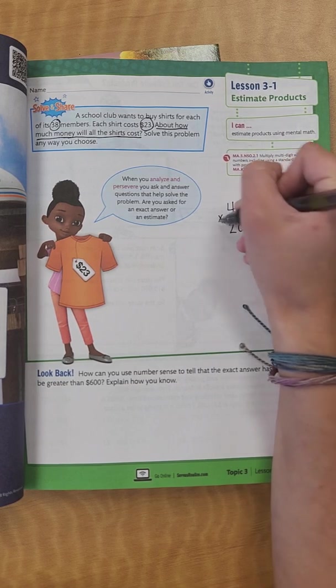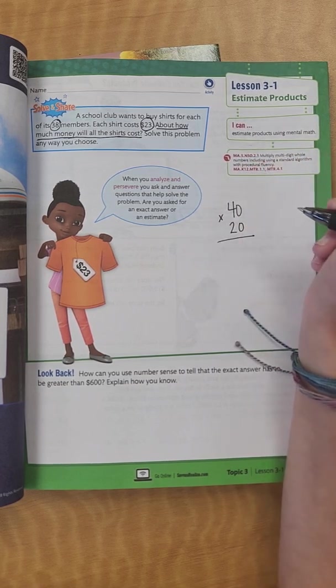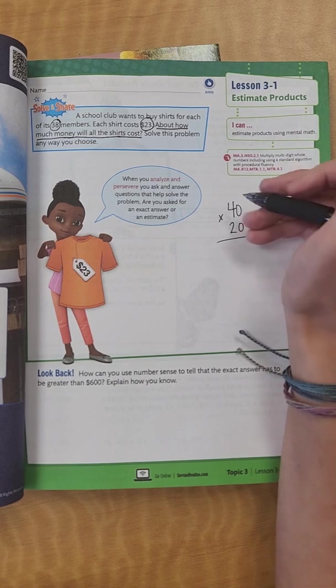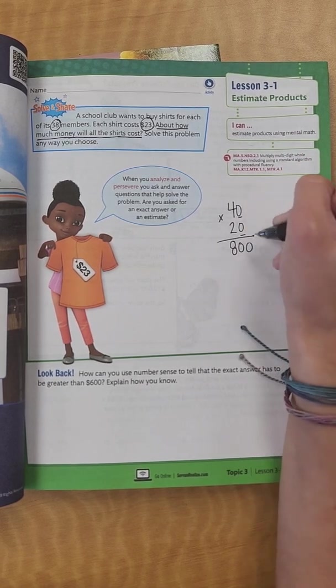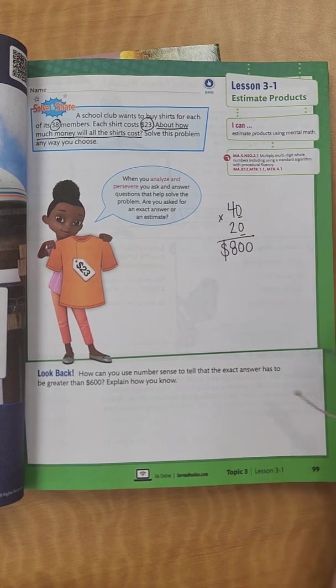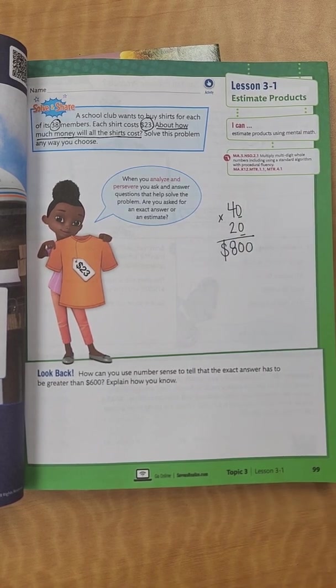So I'm going to say 40 times 20. Now, that's mental math. I can do that real quick. I know that 4 times 2 is 8, and there's 1, 2 zeros that I would add behind it. So it would be about $800.